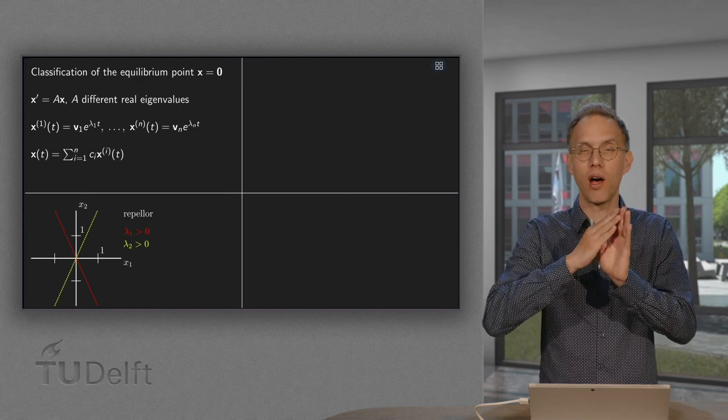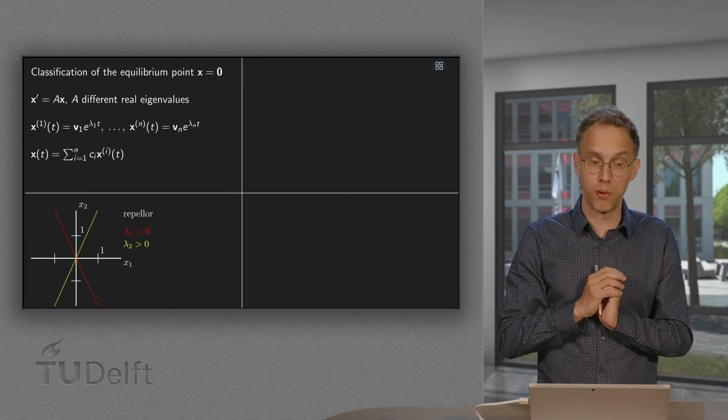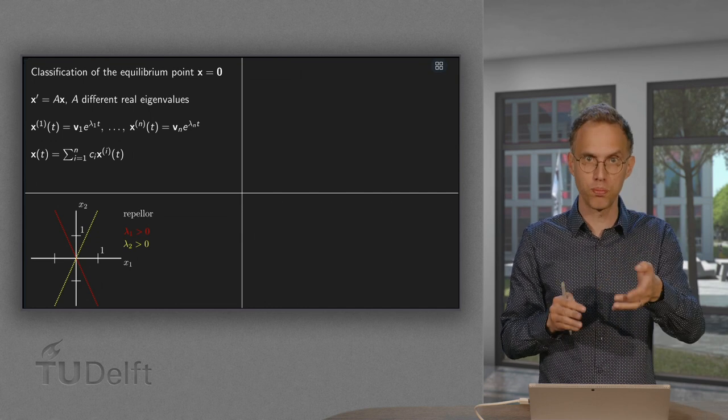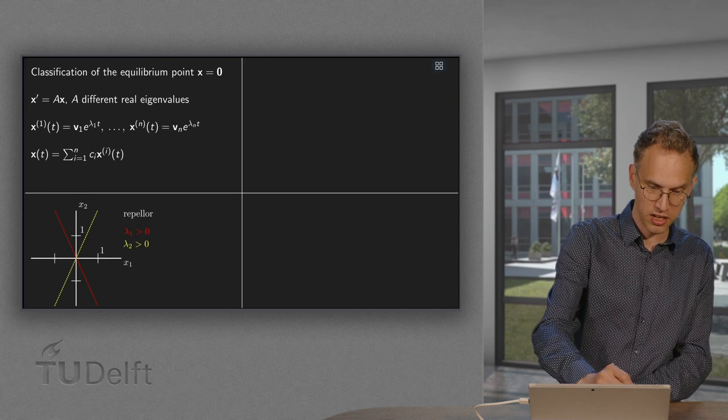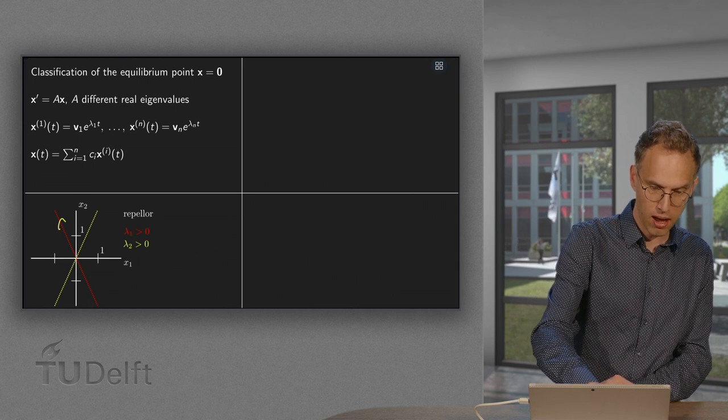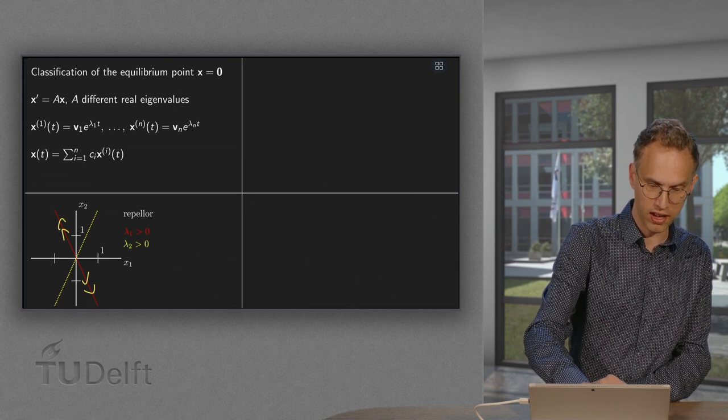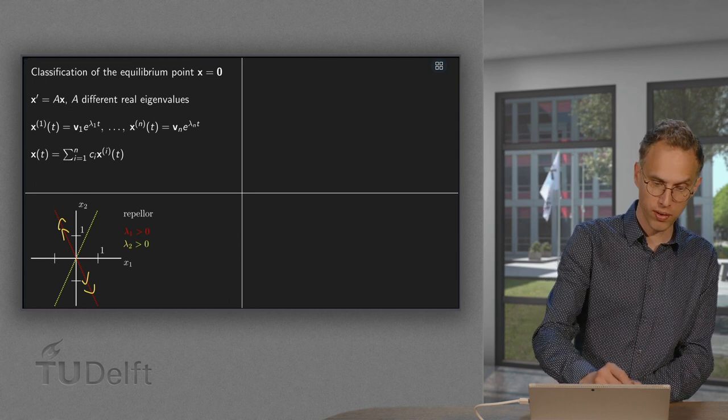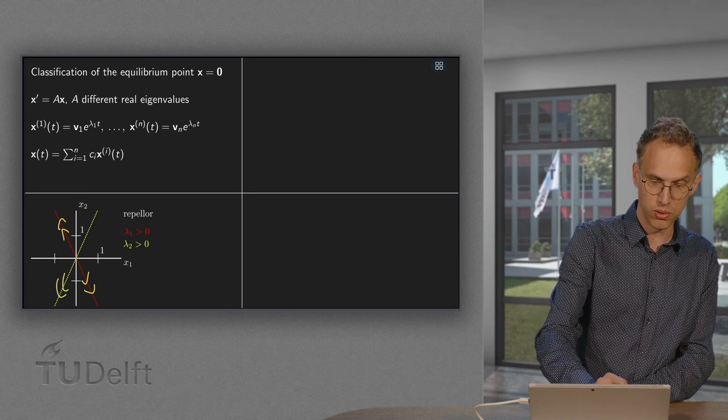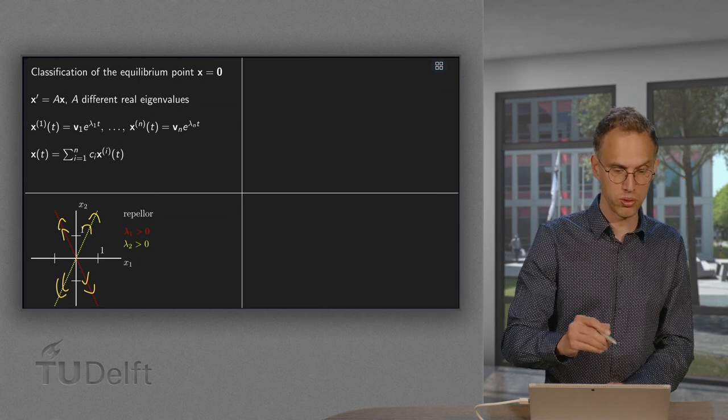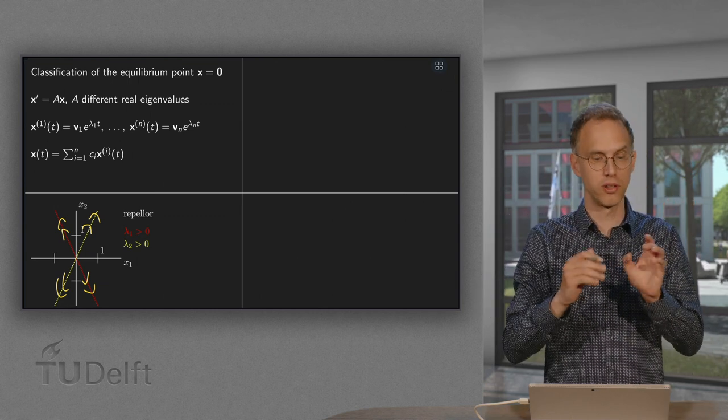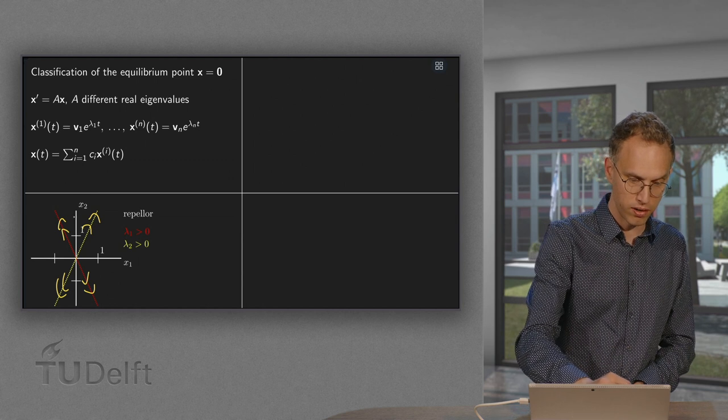Suppose all our eigenvalues are positive. So lambda 1 positive, lambda 2 positive, all of them are positive. So what happens in that case? You are going out due to the positive eigenvalues. If you are on v1, you are going out due to the e^(lambda 2t). If you are on your v2, you are always going out no matter where you are. So if you are here,